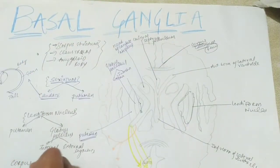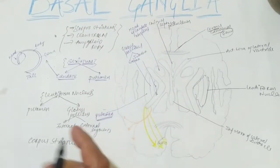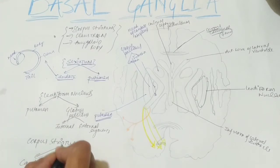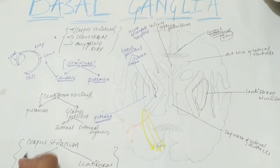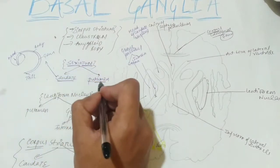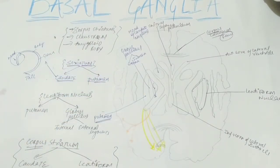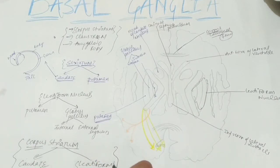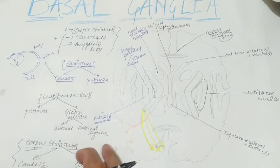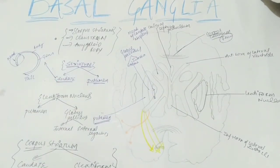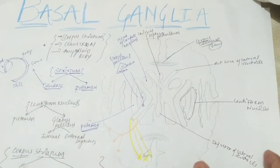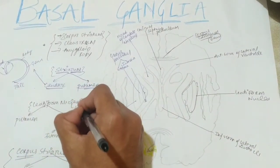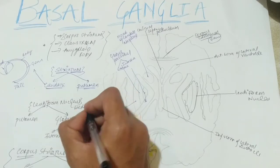Now the classification of corpus striatum: corpus striatum includes your caudate nucleus and your full lentiform nucleus. When we say striatum, it only includes caudate and putamen. When we say corpus striatum, we include caudate nucleus and the full lentiform nucleus — that is the difference between striatum and corpus striatum. Lentiform nucleus includes two parts: putamen and globus pallidus. The lentiform is a wedge-shaped nucleus, also called lens-shaped, and it is biconvex in shape.